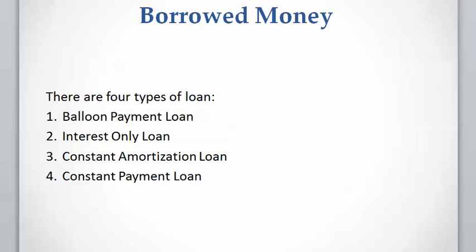There are four types of loan: Balloon Payment Loan, Interest Only Loan, Constant Amortization Loan, and Constant Payment Loan. In the previous video I explained the first two types, Balloon Payment Loan and Interest Only Loan. In this video I'm going to explain the Constant Amortization Loan, and in the next video I'm going to explain the most common type of loan, which is the Constant Payment Loan.